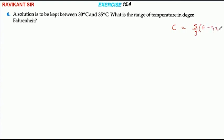This is the formula we have. Given that Celsius is 30 degrees to 35 degrees, we write: 30 < 5/9(F - 32) < 35.